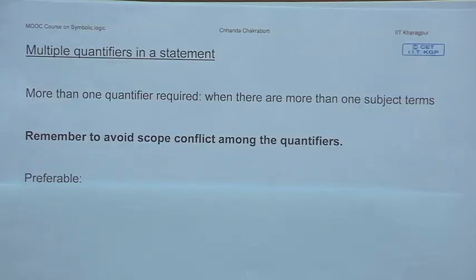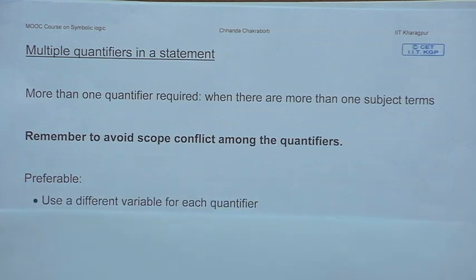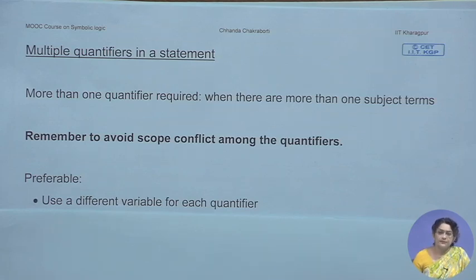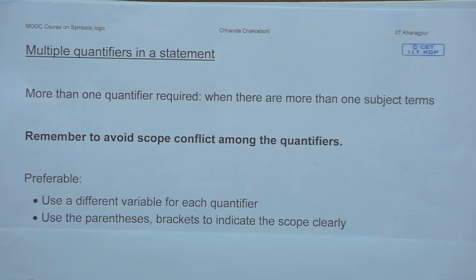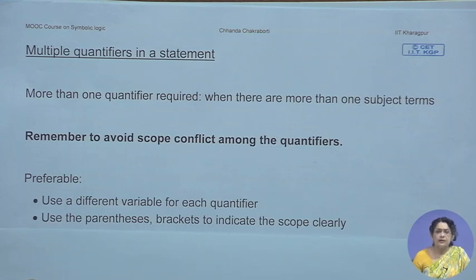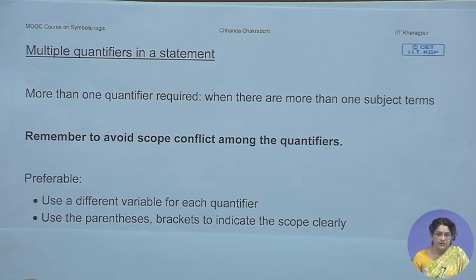How do you avoid scope conflict? One time-tested method is that you choose a different variable for each quantifier. Each time you are using a quantifier, pick a fresh variable. Because it is a new variable and a different variable, there is no question about that variable coming under the scope of any other quantifier. The other method is that you demarcate the scope so clearly that even if you are using the same variable, it is completely clear where one quantifier's scope begins and ends and where the scope of the other quantifier starts and ends.